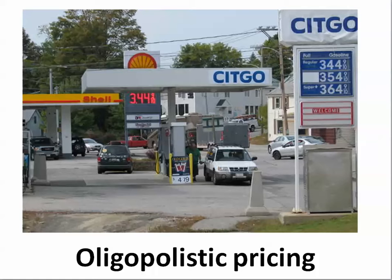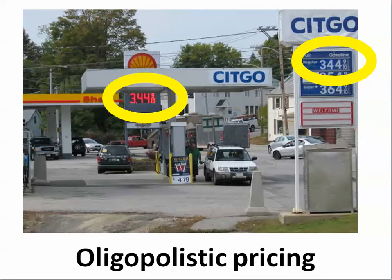We'll also assume there are no people in this town who use only a Shell or Sit-Go credit card. Everyone either pays cash or uses a general credit card, so there's no brand preference. Their prices are identical — each charging $3.44.9 cents per gallon. Obviously what they're doing is splitting the business, each getting roughly half.